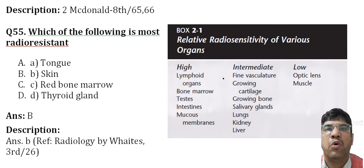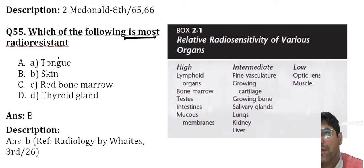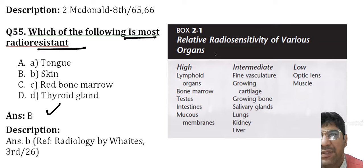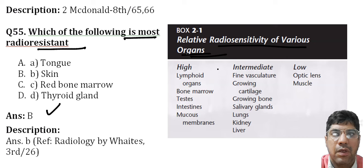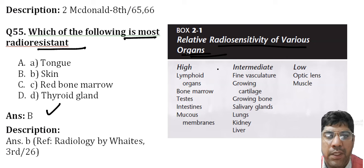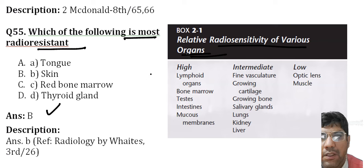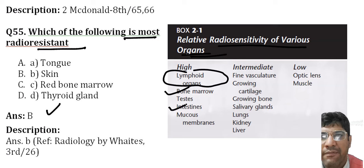Which of the following is most radio-resistant? The answer is skin. The skin is relatively radio-resistant compared to other tissues and can tolerate high levels of radiation exposure without significant damage. The highest radio-sensitivity is seen in lymphoid organs, bone marrow, intestines, and mucous membranes, whereas the lowest are the optic lens and muscles.